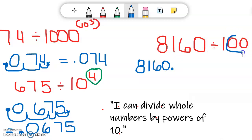I have one, two. There's two zeros. So I'm going to move my decimal point to the left two spaces, one, two. So now my decimal point is there.